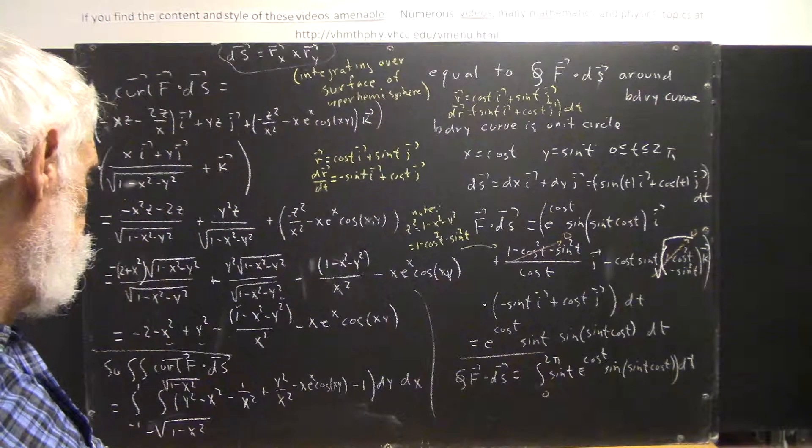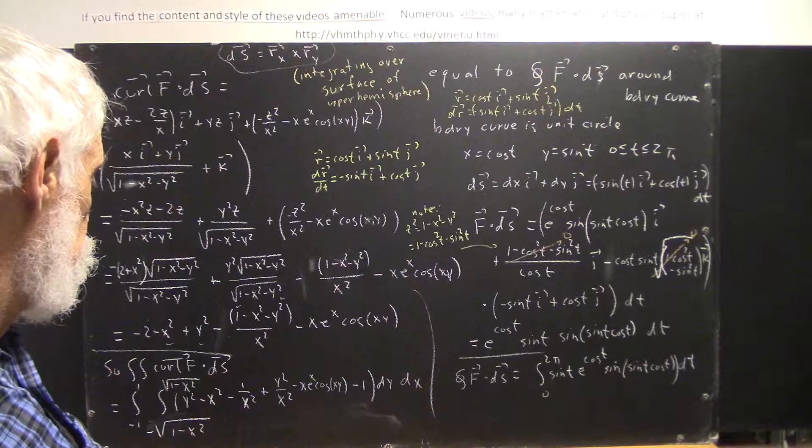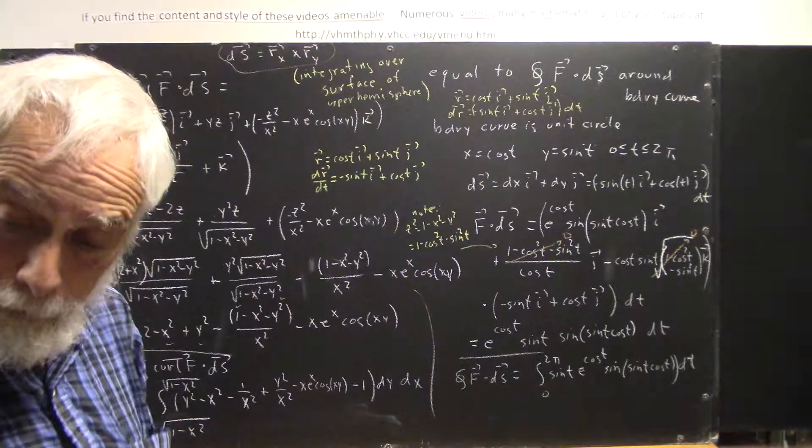the integral of f dot ds around the boundary is this integral. So, if you want to get this integral, you can do this one. And if you do that, that might tell you something about this sine of sine t cosine t thing.